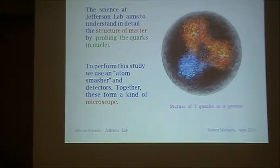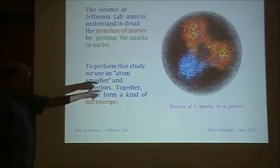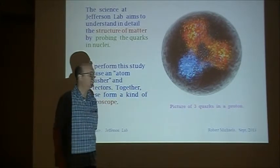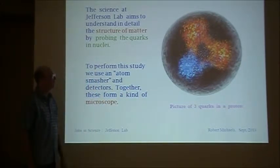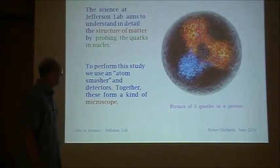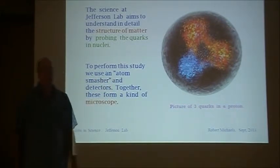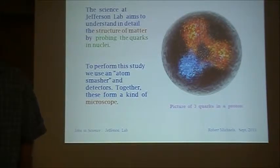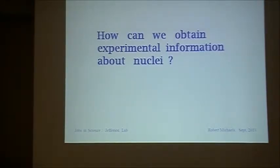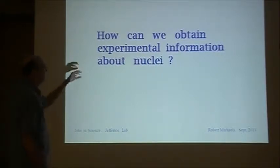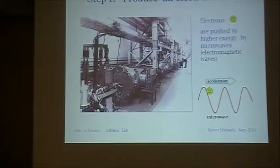The science at Jefferson Lab aims to understand in detail the structure of matter by probing the quarks in nuclei. To perform this study we use an atom smasher and detectors. Together these form a kind of microscope. So the question I'd like to ask first is how can we obtain experimental information about nuclei? Why do we need a place like Jefferson Lab and what does it do? I'm going to go through a stepwise procedure of what we do. There will be five steps in total.